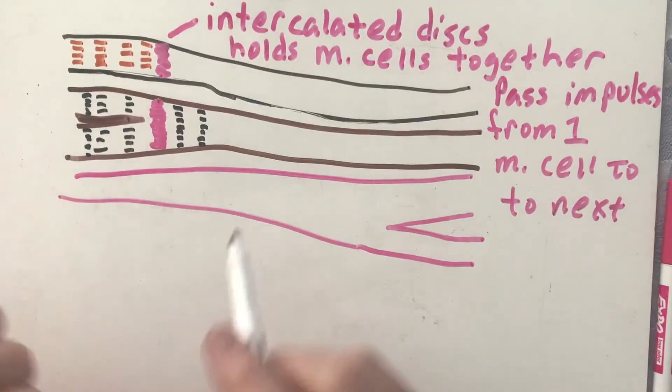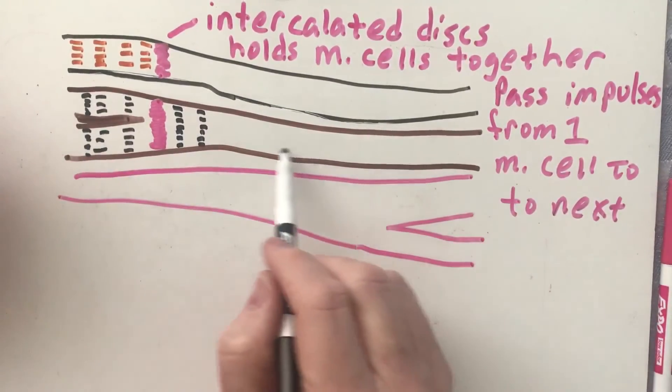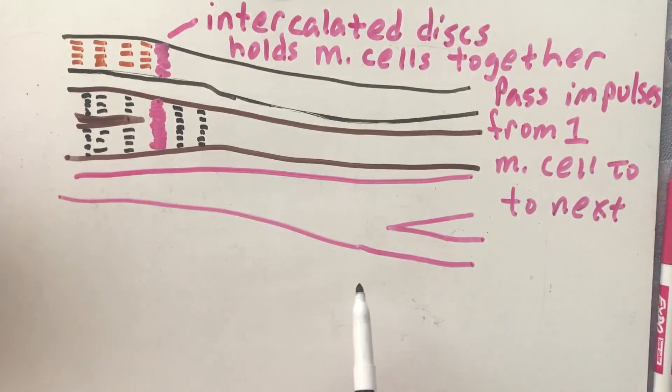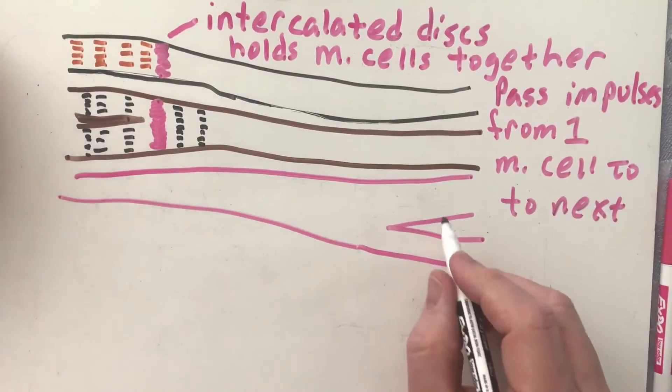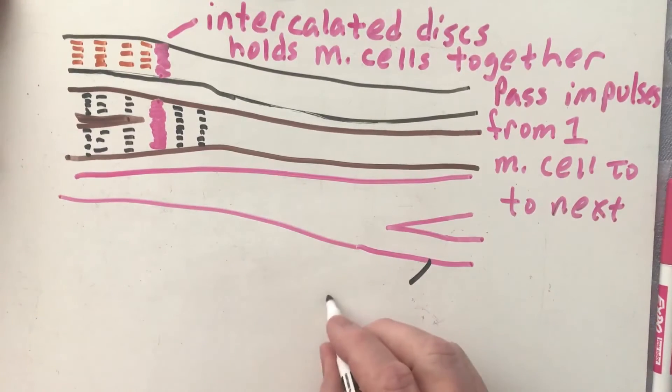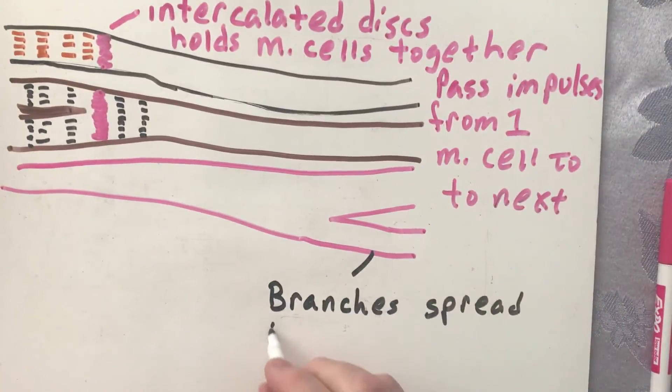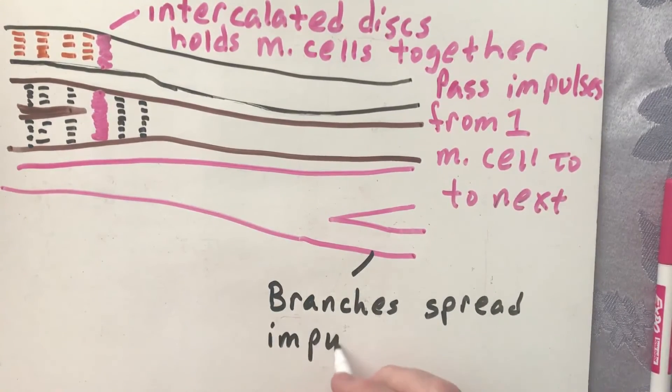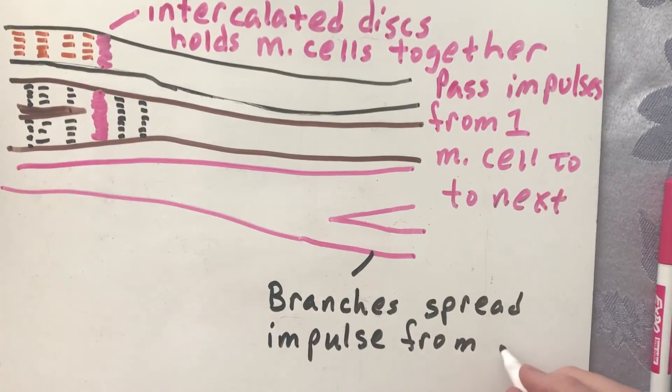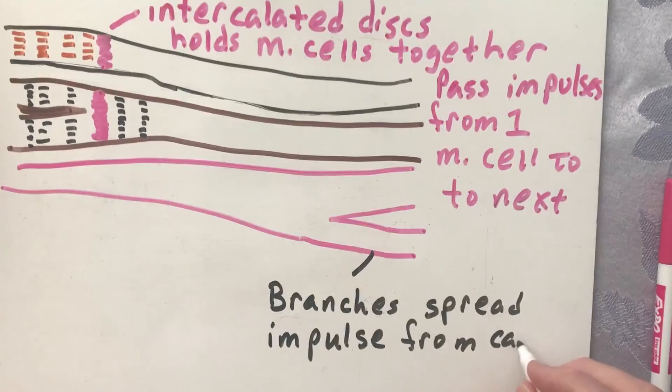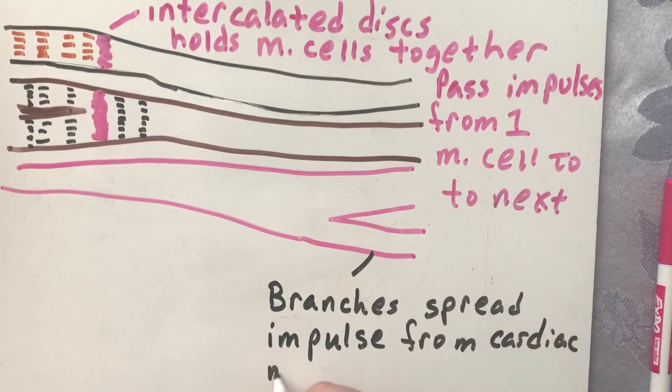And remember the intercalated disc is responsible, or it helps hold these cells together, but it's also responsible for passing electrical impulses that come down the muscle from one side to the next. Now the other thing is, as we said, these are branching. So the reason you have branches is it also helps spread the impulse from the muscles too, from one cardiac muscle to the next.